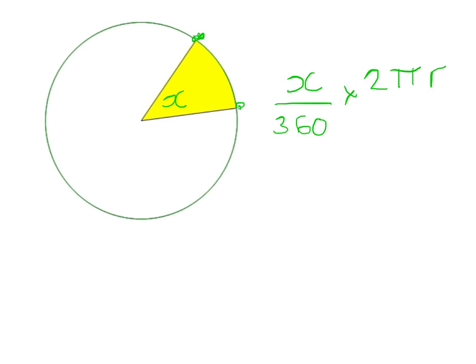We could work it out using that, but we could also use a simplified version because this 2 will cancel into our 360. So the easy formula is x/180 × π × r.